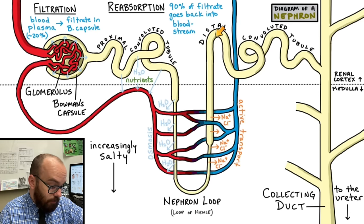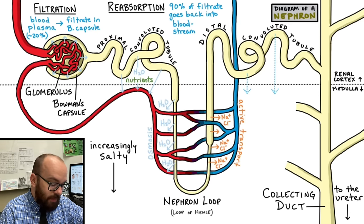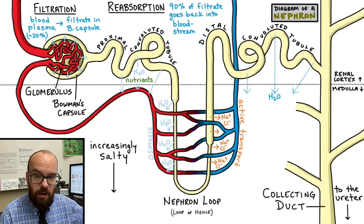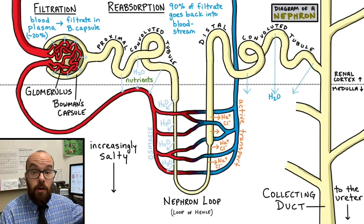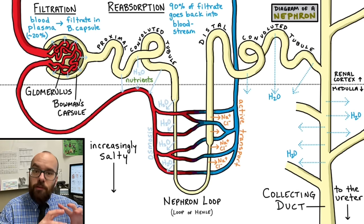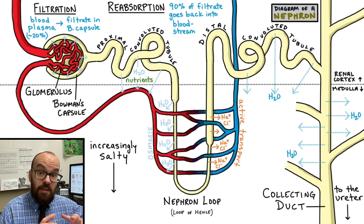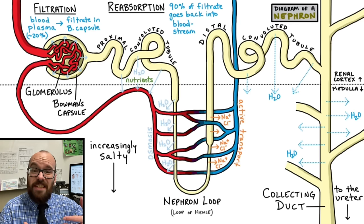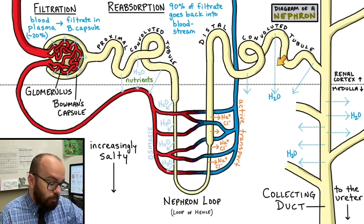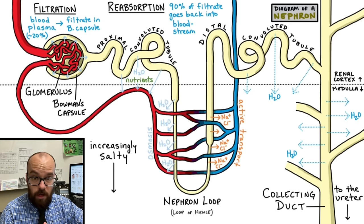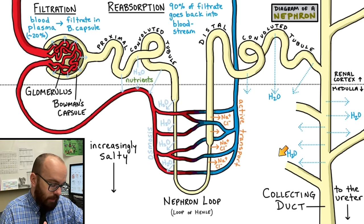From there, the filtrate travels through the distal convoluted tubule. At the distal convoluted tubule, water can diffuse out — note that I said it can, not that it will. That depends. The water can also diffuse out from the collecting duct, but again, that's going to depend. This is where the true regulation happens — where our body decides, do we want to conserve as much water as possible, or urinate out a lot of water? If you're dehydrated, we're going to reabsorb as much water as we can. The distal convoluted tubule will become very leaky to water, and so will the collecting duct, so water can leak out into the salty medulla area.